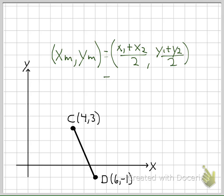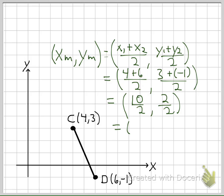Plug in the values we have for C and D, we get that 4 plus 6 over 2, and then 3 plus negative 1 over 2. We simplify, and we get 10 over 2, and 2 over 2. So our coordinates for our midpoint are 5 and positive 1.